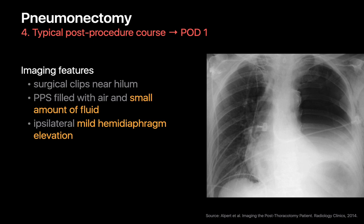On post-op day 1, the post-pneumonectomy space will be mostly air-filled but now contain a small to medium amount of fluid. If there's air under the hemidiaphragm, such as stomach gas in this patient's image, you'll also see that the hemidiaphragm on the side of the pneumonectomy is now mildly elevated.